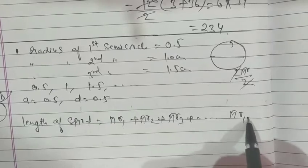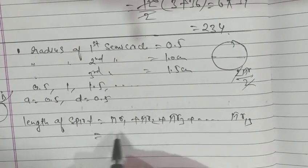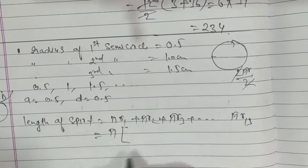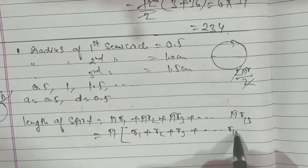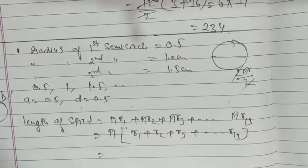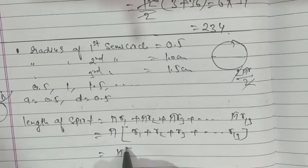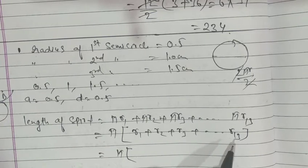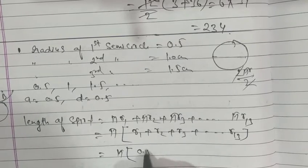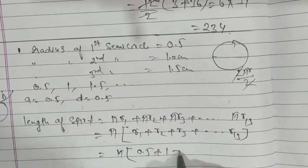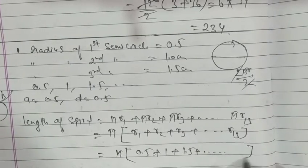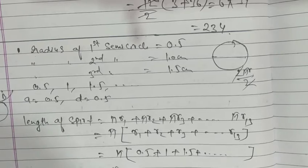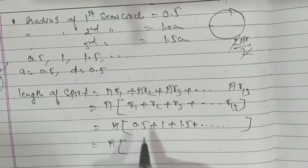π is common in all, take π out, inside what remains? r1 plus r2 plus r3 plus so on, so on, r13.